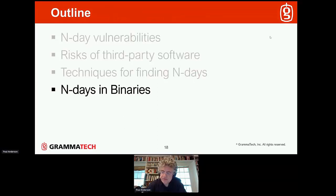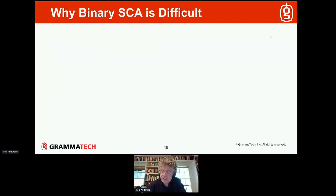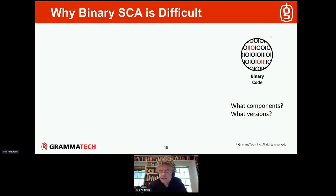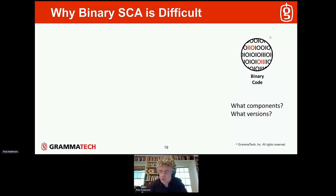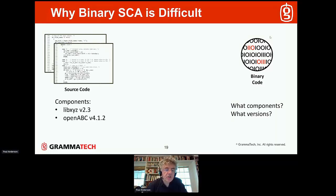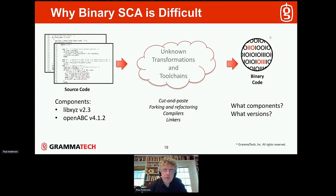Let's talk about finding n-days in binaries. The final result of a software development activity is typically some binary code — an executable or a set of DLLs. The question for software component analysis is: what components are in that binary? What code was statically compiled into it, and what versions? When the code was originally compiled, the components and versions were known. But if all you have is the binary, you don't know what came before — a huge set of transformations and tool chains that really hide the origin of the source code.